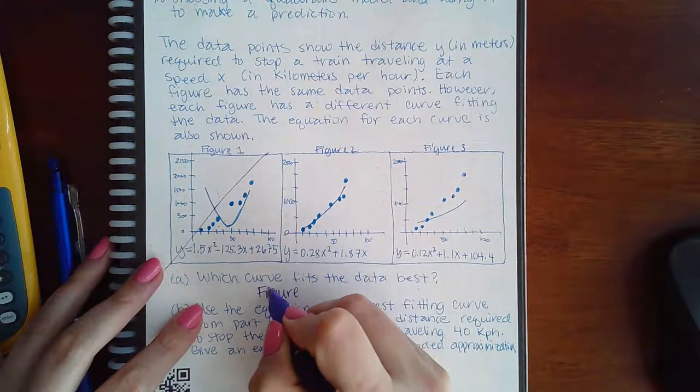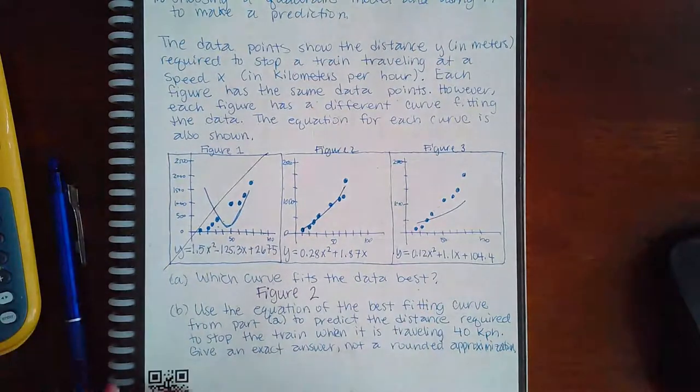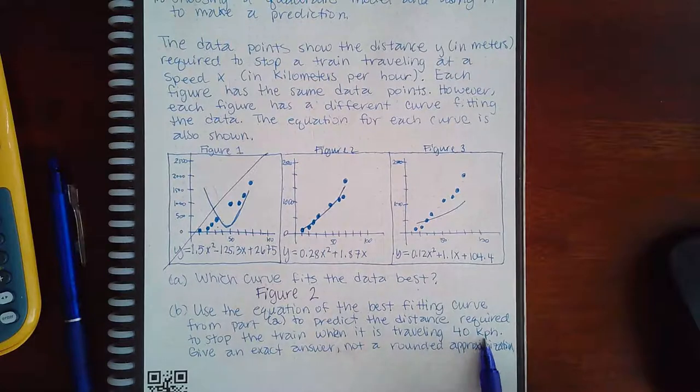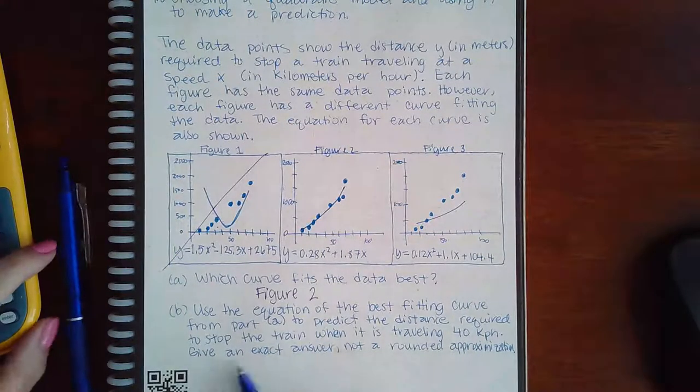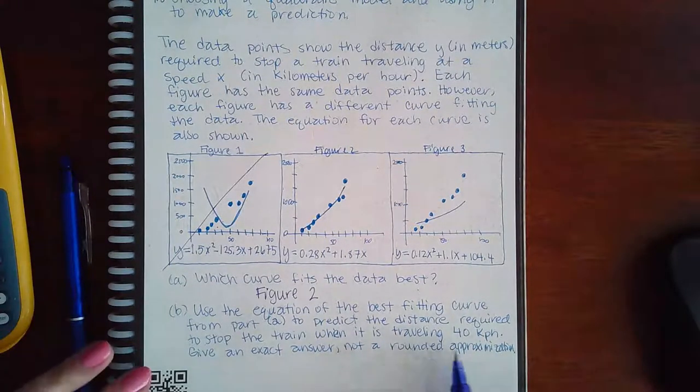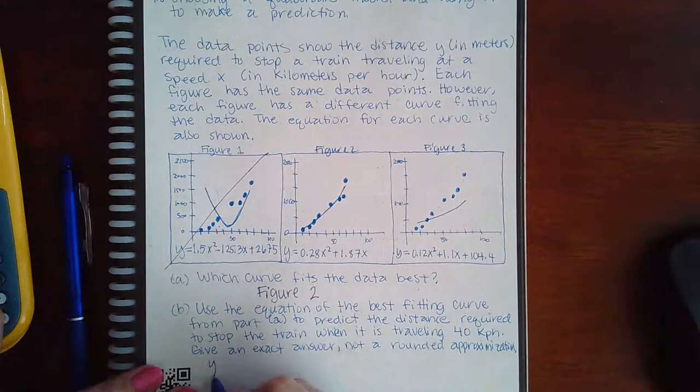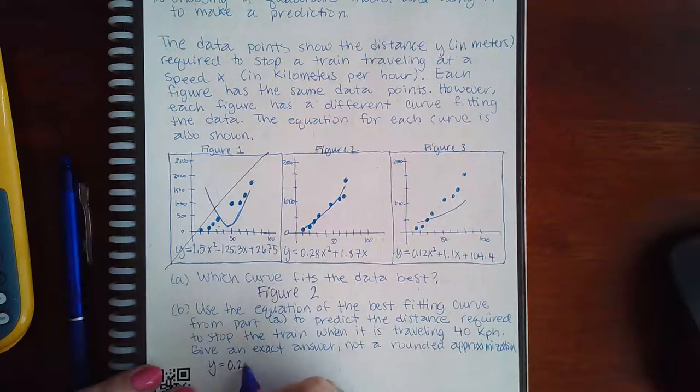It says use the equation of the best fitting curve from part a to predict the distance required to stop the train when it is traveling 40 kilometers per hour. Give an exact answer, not a rounded approximation. So basically all they're doing is plugging in that value that they've given you, so 40 squared into the equation given for figure 2.